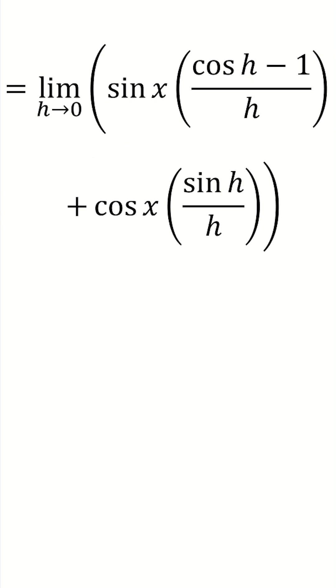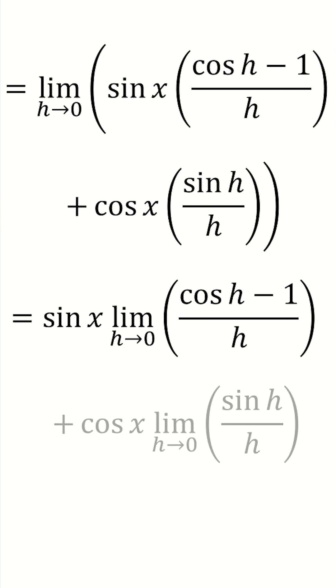But wait a minute, sine of x only has an x in it, cos of x only has an x in it, so it's not affected by the limit as h tends towards zero. So we can take those things as factors out the front of the limits, leaving us with sine of x, lots of the limit of cos of h minus 1 over h, plus cos of x, lots of the limit as h tends towards zero of sine h over h.